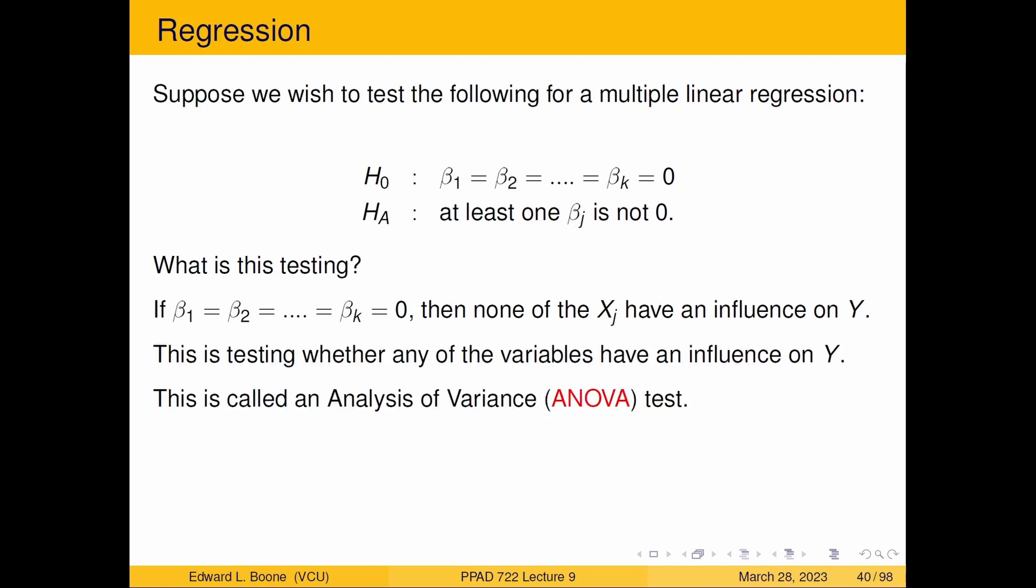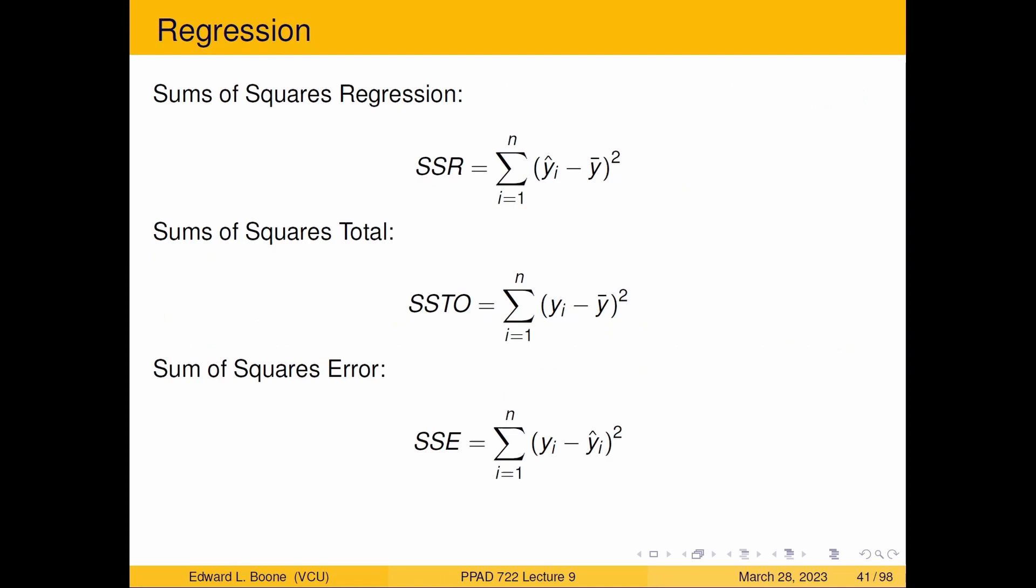And so this is what's called an analysis of variance test, or ANOVA. But you want to know of the predictors that I have for Y, do any of them have an influence on Y?